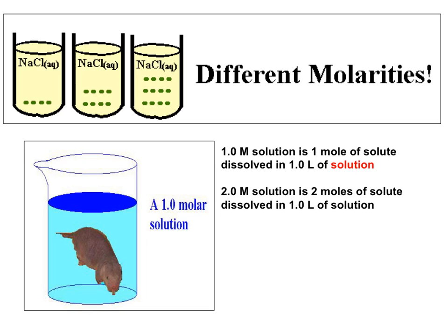Different molarities mean different concentrations. Looking at the picture, you can see that sodium chloride is dissolved in the same amount of solution each time — here we have four moles of solute particles versus eight versus twelve. The more solute particles you have dissolved in the same amount of solution, the more concentrated it becomes. This is an example of a 12 molar solution versus the first beaker, which was a 4 molar solution.